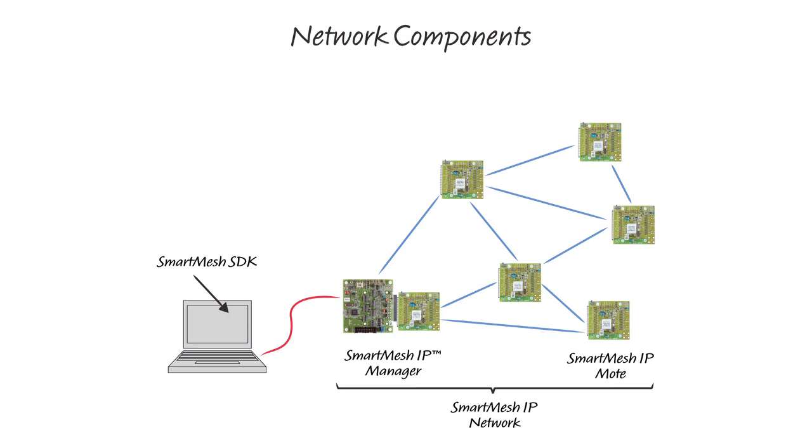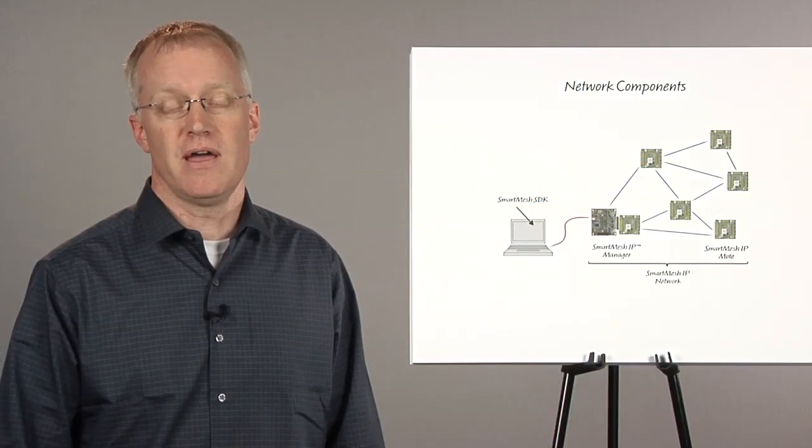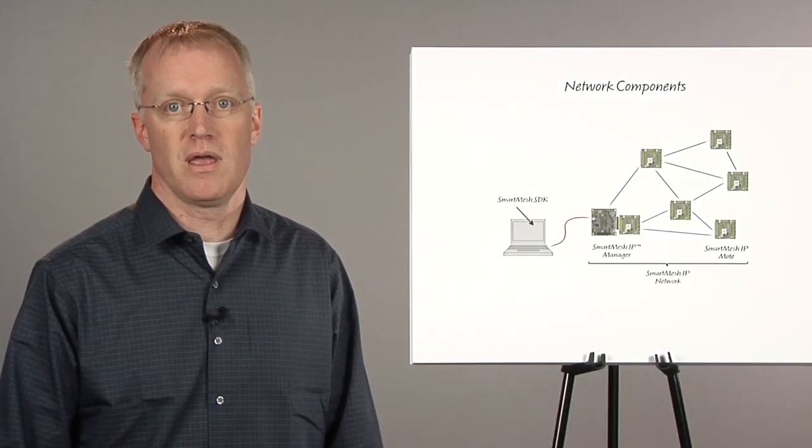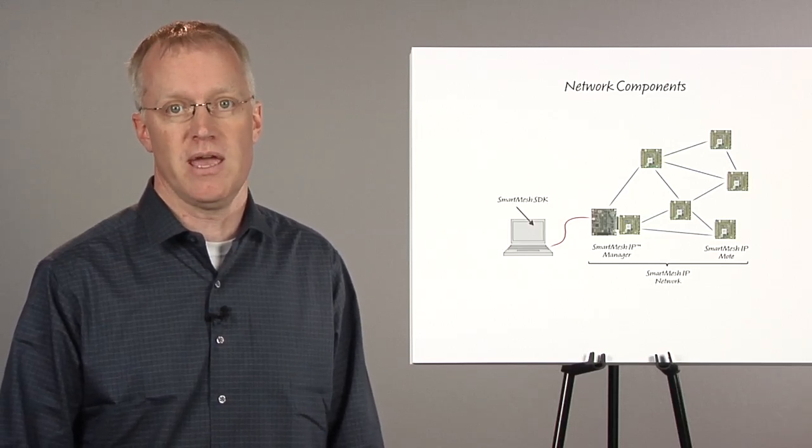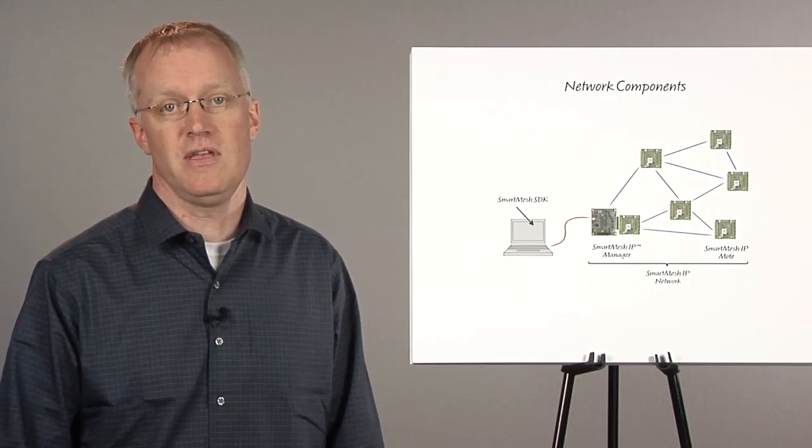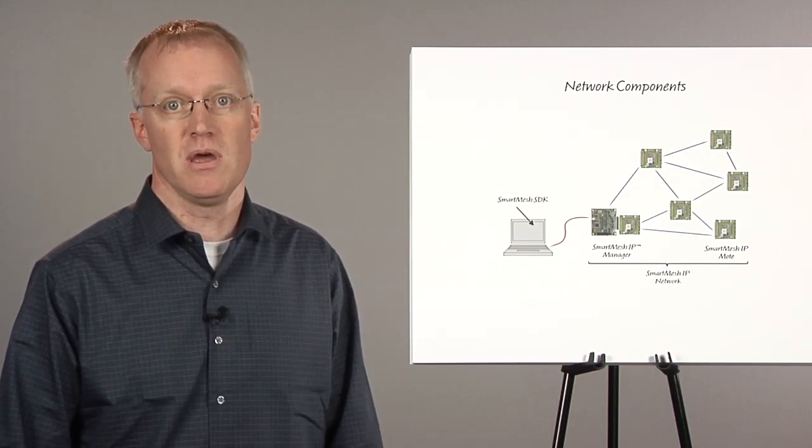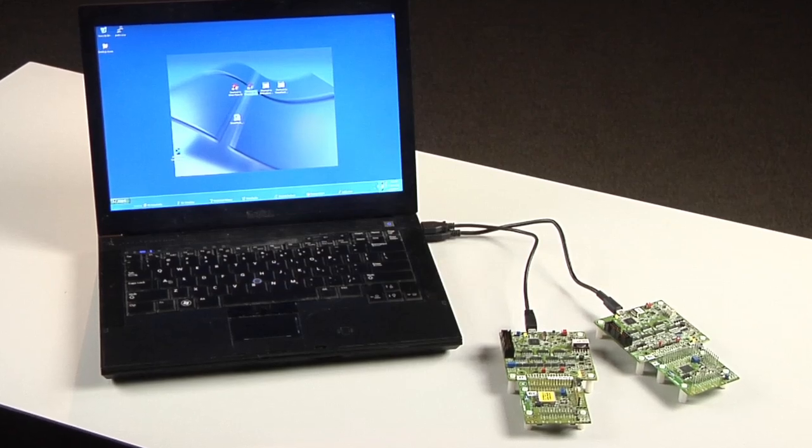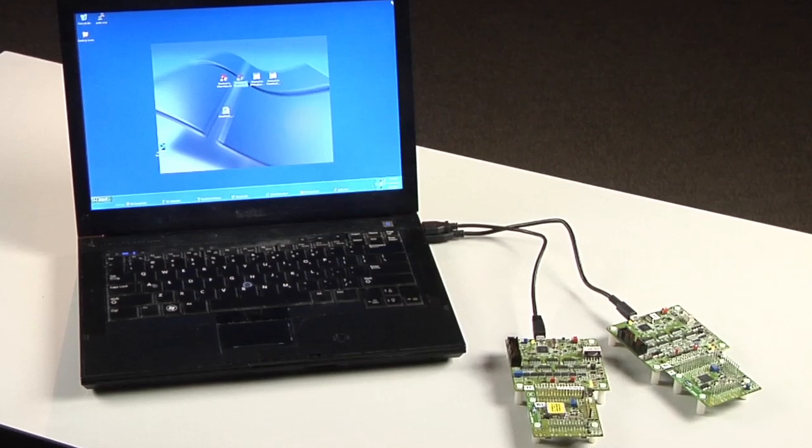A Smart Mesh IP network is comprised of a Smart Mesh IP Manager and a number of Smart Mesh IP motes. Each mote represents a place where your sensor application can send data across the network. The manager is the device that builds and maintains the network and also represents the place where sensor data is delivered and made available to your data collection application. Any one network can consist of up to 100 motes such as the LTC 5800 IPM and one network manager such as the LTC 5800 IPR. In my setup, I will use a PC to communicate with a Smart Mesh IP Manager or a mote using software tools I downloaded from Linear.com.